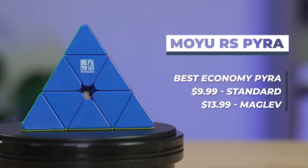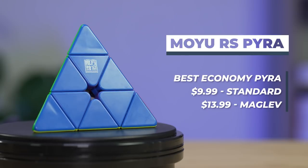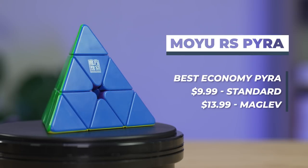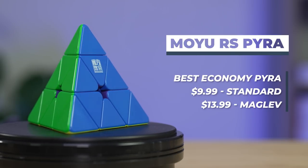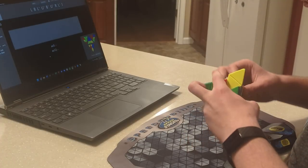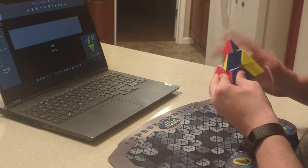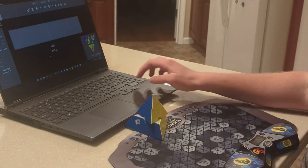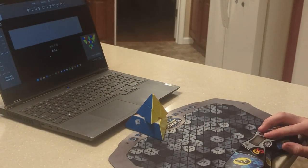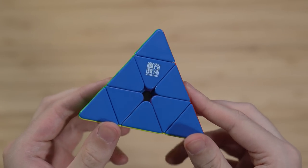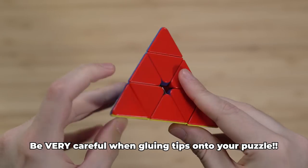Finally, we have the RS, which is a solid budget puzzle. Both versions are pretty reasonable, but the maglev is only a dollar or two cheaper than the Waylong, so if you're going to go for that, just get a Waylong. It doesn't have adjustment features, but it performs pretty well and doesn't have any major issues. One thing you should note is that the tips fall off fairly easily, sometimes when it hits the table after a solve. So if you find tensions you like, it might be a good idea to glue the tips on to prevent DNFs.